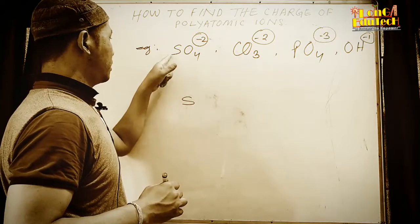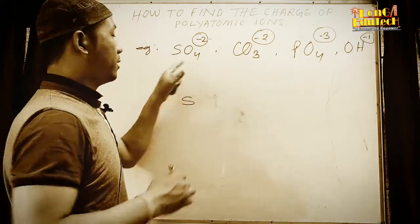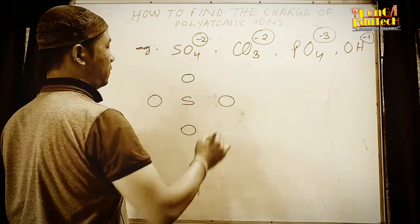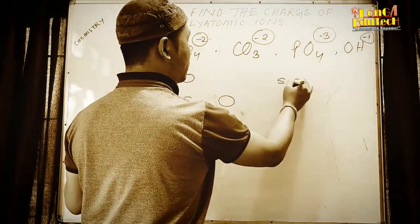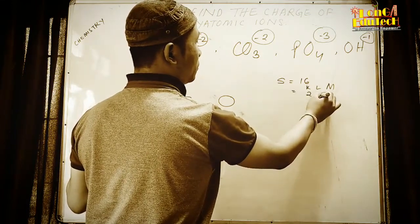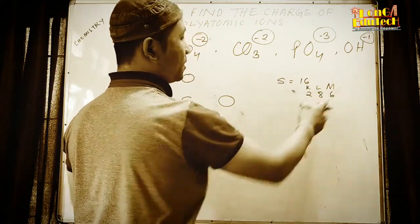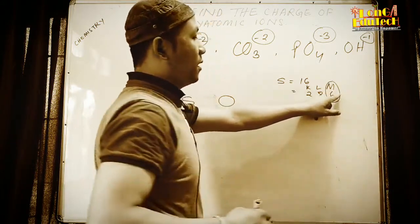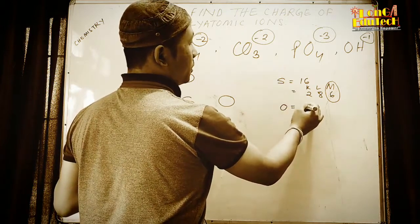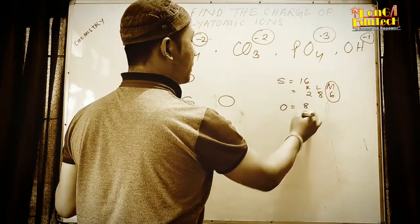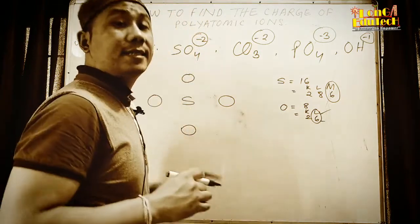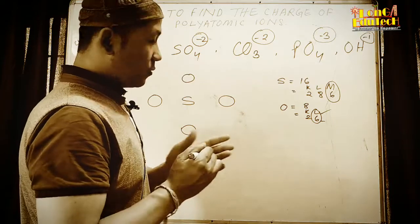The four oxygens are placed around the central sulfur. Sulfur has atomic number 16, so its electronic configuration is 2, 8, 6 — giving it six valence electrons. Oxygen has atomic number 8, configuration 2, 6 — also six valence electrons. We need to know that this is a covalent compound, where atoms become stable by sharing electrons.